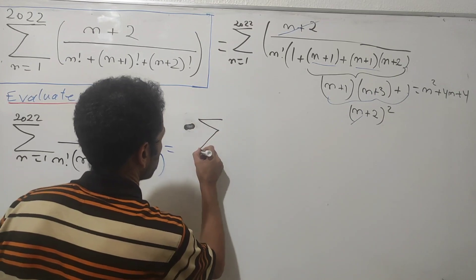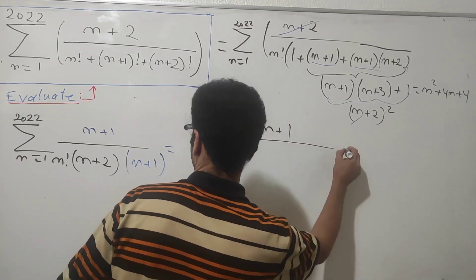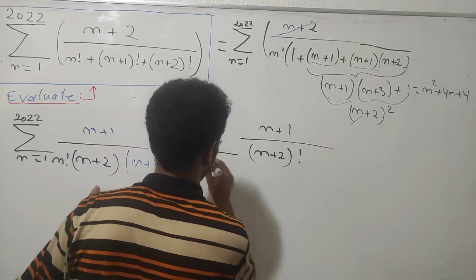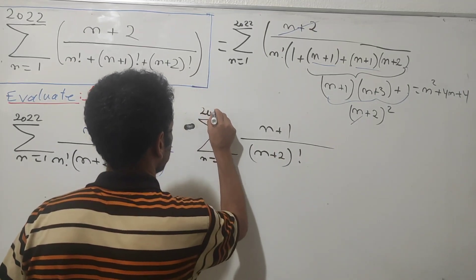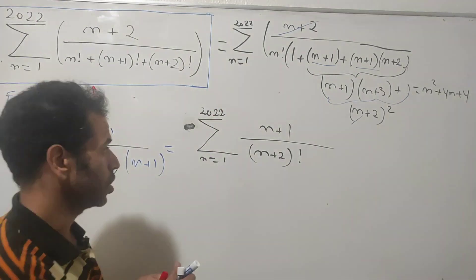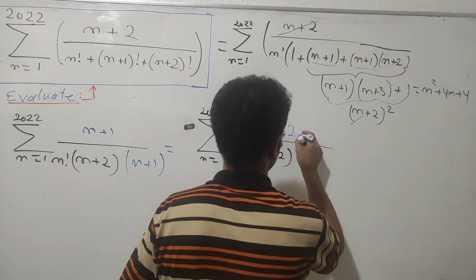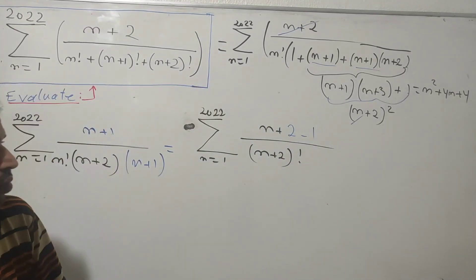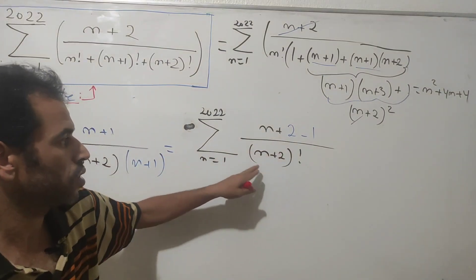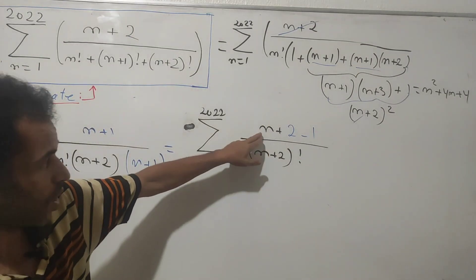So I get the sum of (n+1) over (n+2) factorial as n goes from 1 to 2022. Now I write (n+1) as (n+2) minus 1, splitting this fraction into two parts.